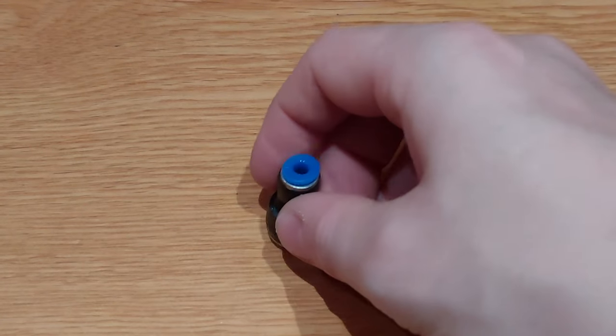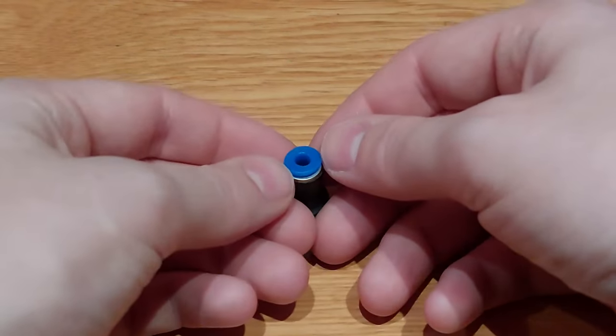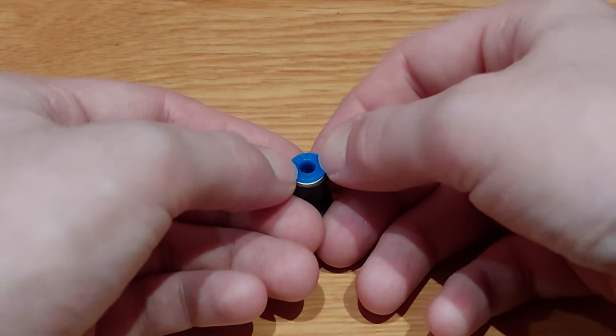At first I was looking at these pneumatic couplers. These have a ring, and when you push this back the tube is released.